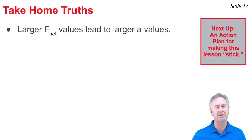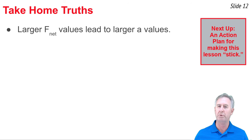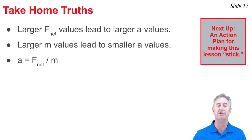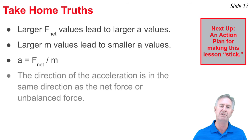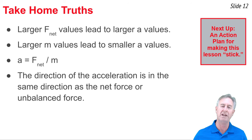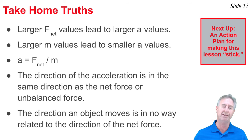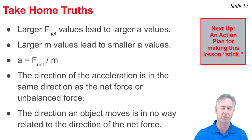Here are the take-home truths from Newton's Second Law: A and F are directly proportional — a larger net force means a larger acceleration. A and mass are inversely proportional — a larger mass means a smaller acceleration. Together, these give the equation: acceleration equals F_net divided by mass. The direction of acceleration is always the same as the direction of the net force. And finally, what we can never determine from a force diagram alone is which way an object is moving.